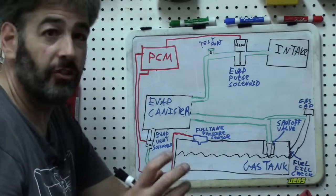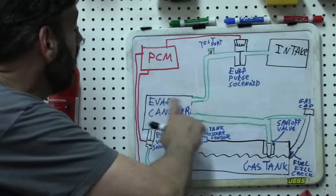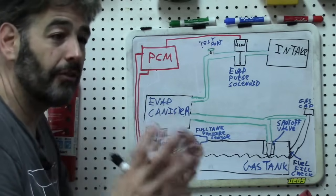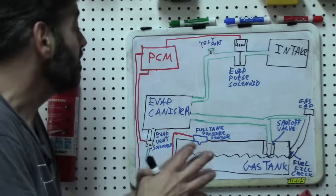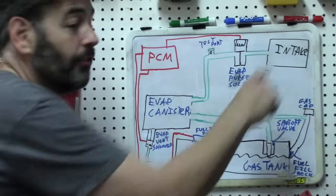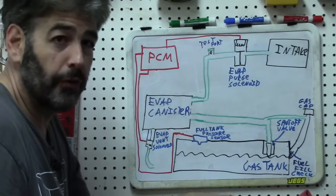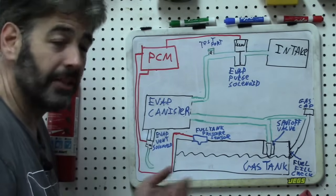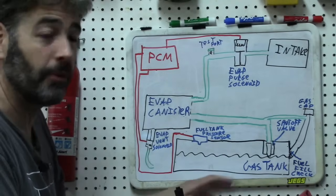So, that's the idea with the EVAP system is to capture these vapors, which is done in this charcoal canister, an activated charcoal canister, which will capture those vapors. And then, under the right conditions, the vapors will be released into the intake manifold to be burned as fuel. So, it helps with fuel economy, helps with emissions, all kinds of things like that that are beneficial. So, that's the purpose of the system.